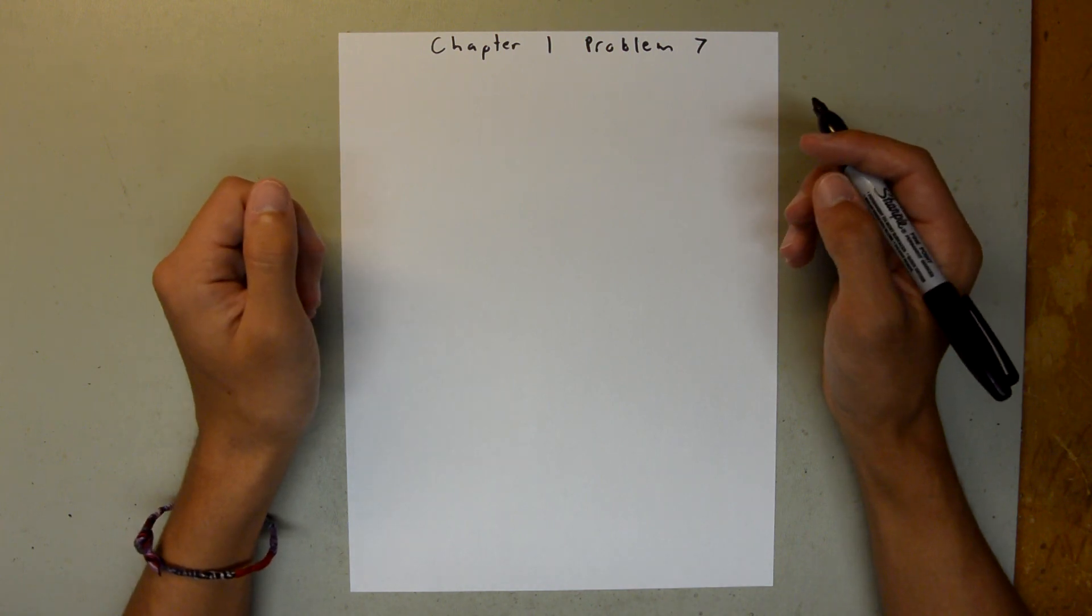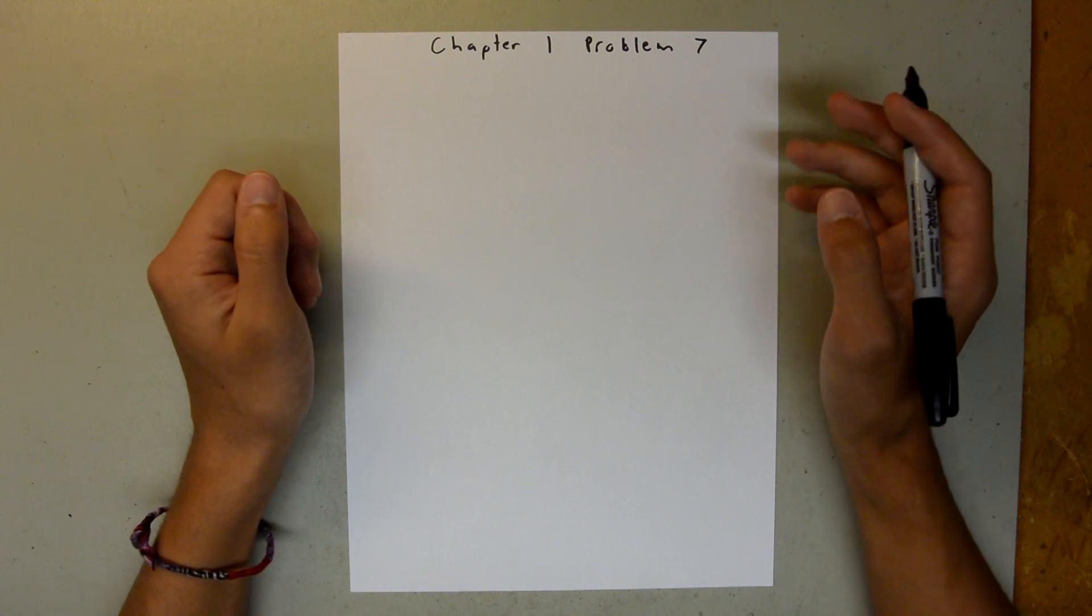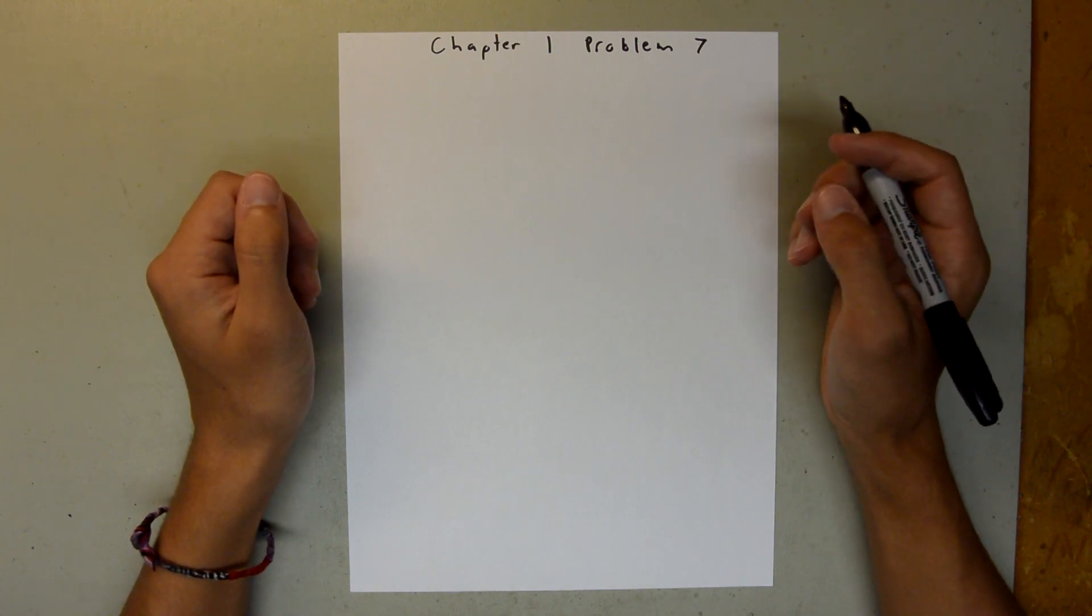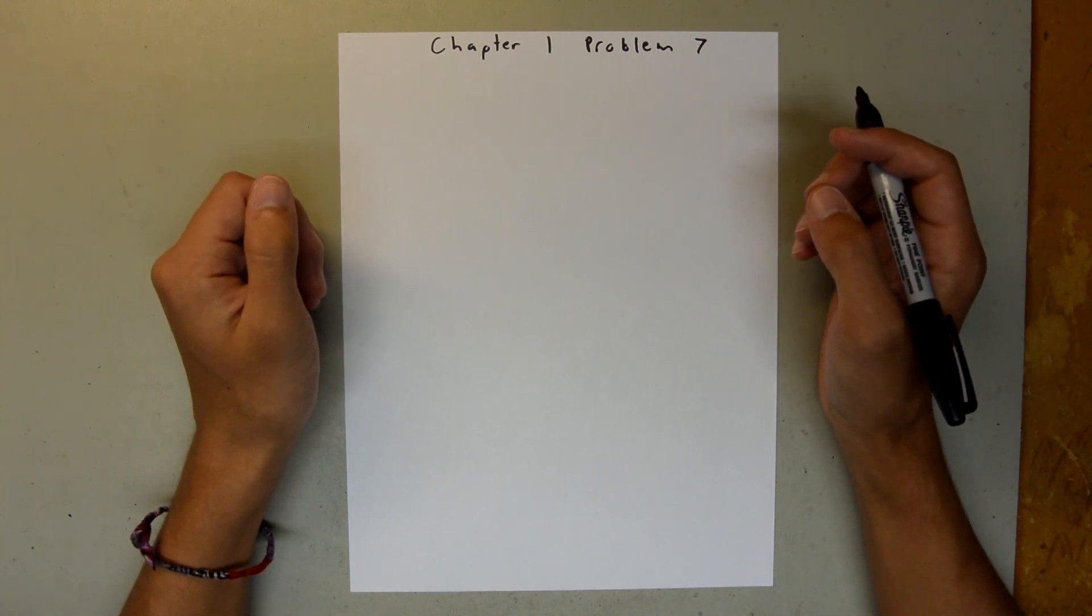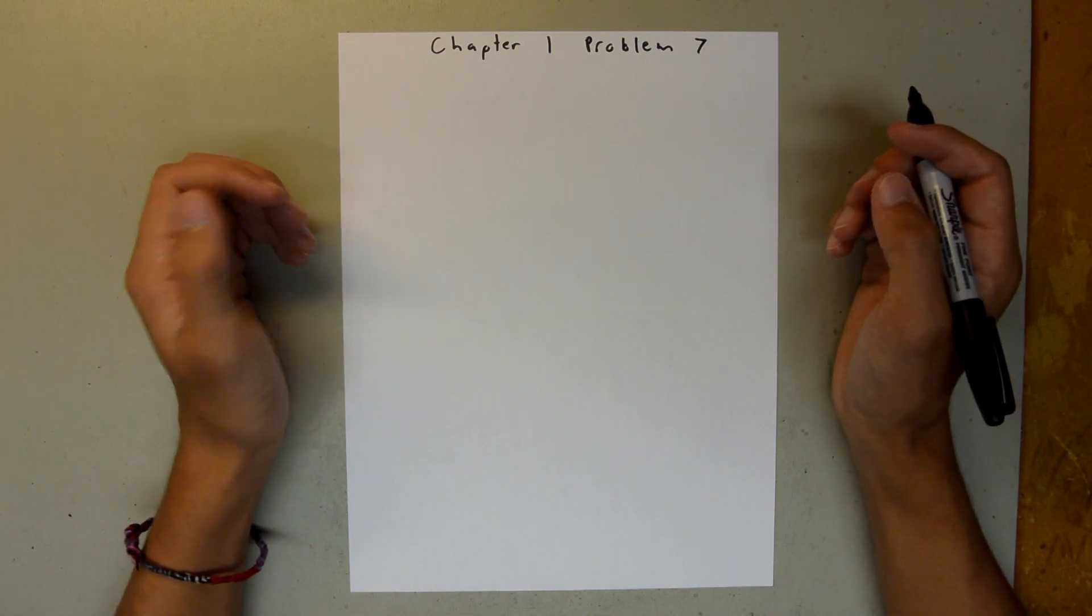Chapter 1 is all about measurement, and in Problem 7, we are told that Antarctica is roughly a half cylinder, and we are asked to find how many cubic centimeters of ice Antarctica is made up of.